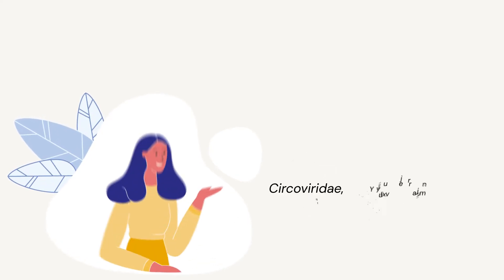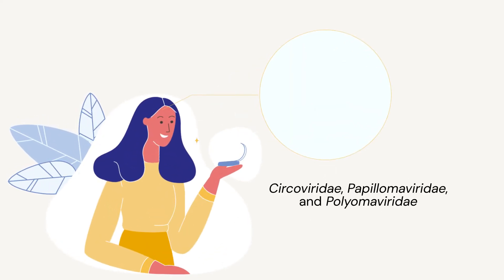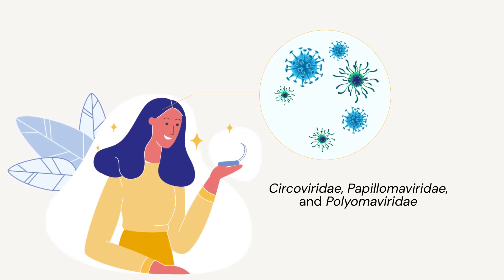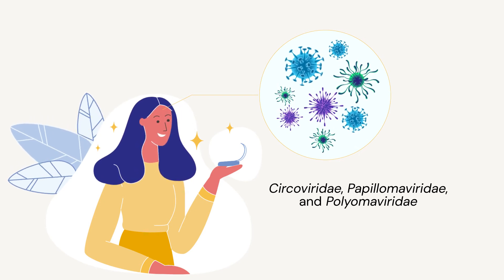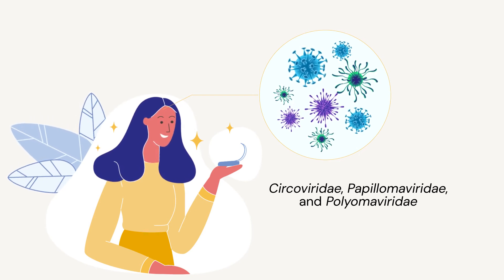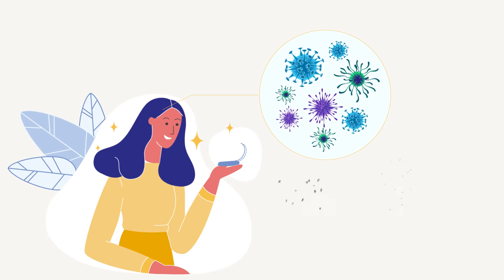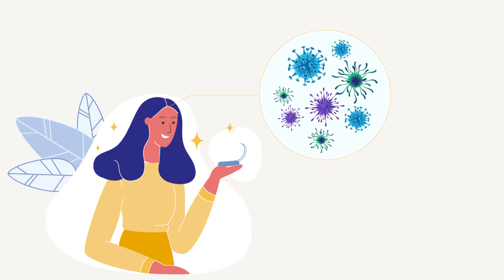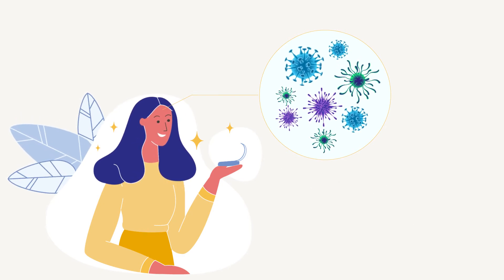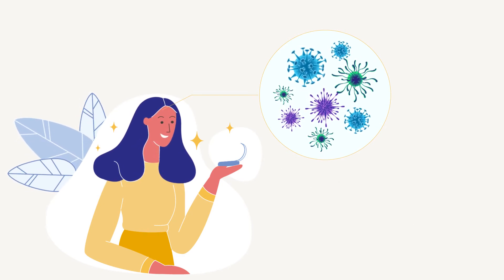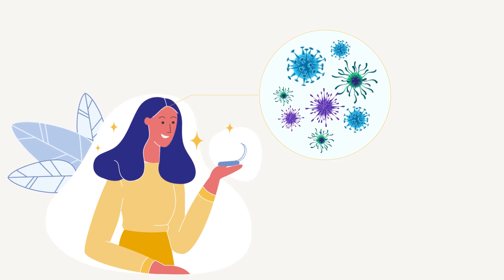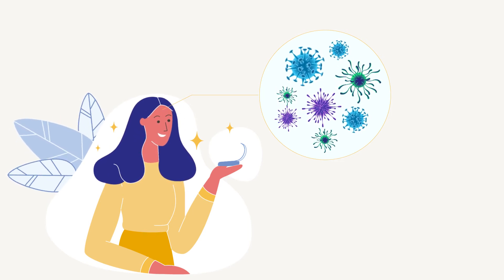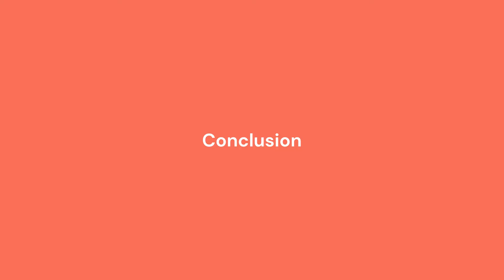Initial research has shown that Circoviridae, Papillomaviridae and Polyomaviridae are the most common families of DNA viruses that can be found on the skin. Unfortunately, due to limitations in the techniques used to identify viruses in our microbiome, there currently isn't much information on this topic.